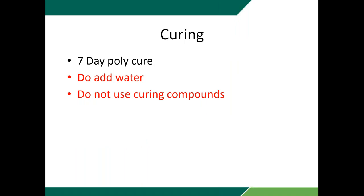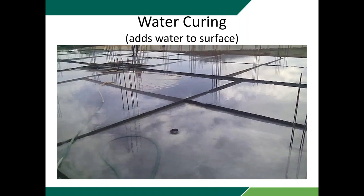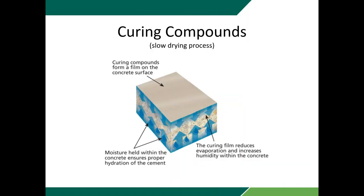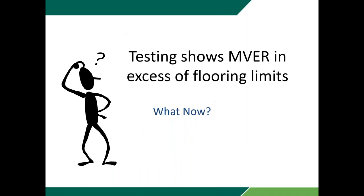When curing the concrete, a seven-day poly cure is typically appropriate. It's critical that concrete be cured, but once cured for seven days, you want to get that poly off and let it start drying out. We don't want to add water to the concrete surface to cure it — that only extends drying time. We don't want to use curing compounds either, because they slow the drying process — curing compounds allow moisture vapor to breathe out of the concrete but at a much slower rate. So when we want to get flooring down early, we should poly cure it, then remove the poly and allow the slab to dry, hopefully with HVAC running.